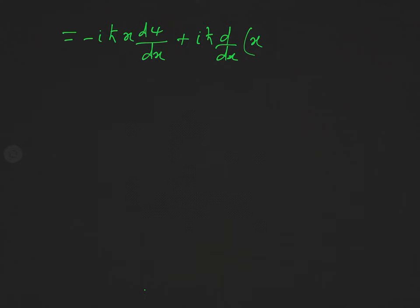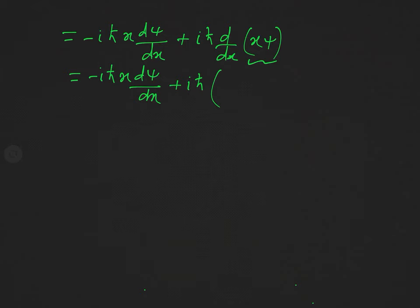In the second term, x is inside the operator, so this is the derivative of the product x times ψ. Applying the product rule of differentiation: d/dx(x·ψ) = x(dψ/dx) + ψ·(dx/dx) = x(dψ/dx) + ψ, since dx/dx equals 1.